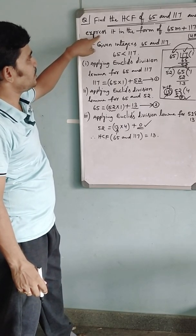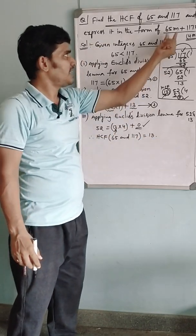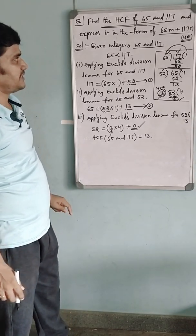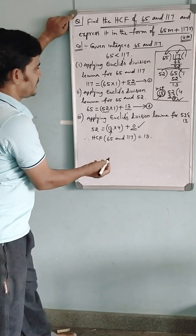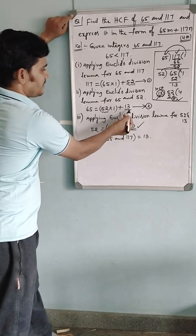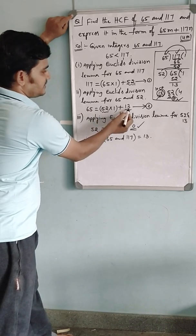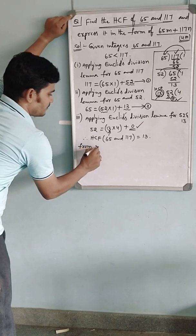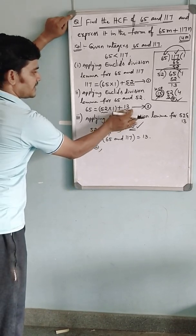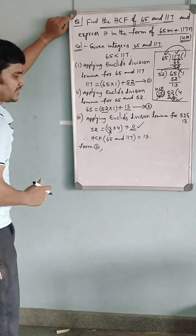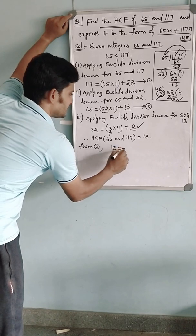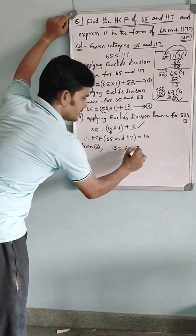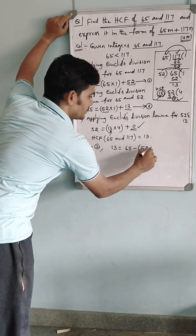The next step is to express 13 in the form of 65M plus 117N. Where do we find 13? See the second equation — 13 can be written as 65 minus 52 into 1. So 13 equals 65 minus 52.